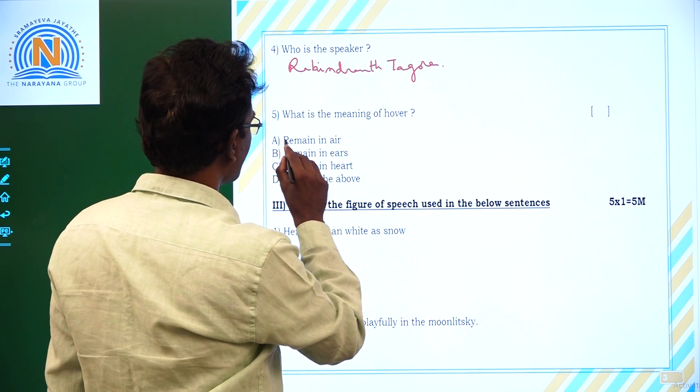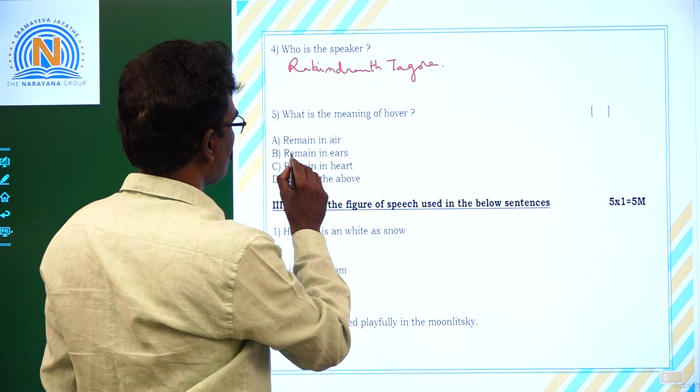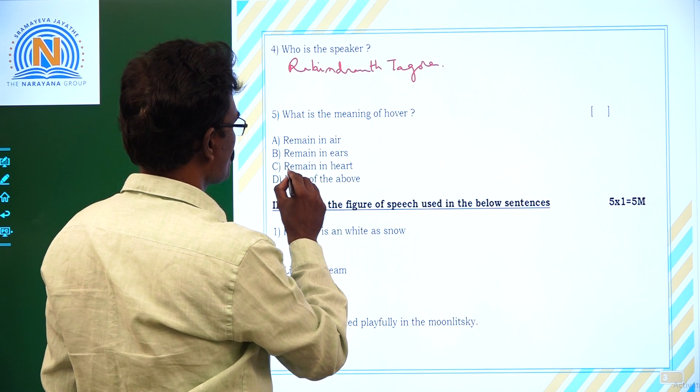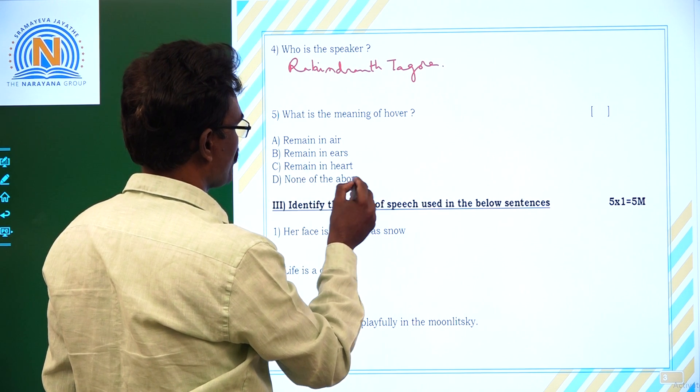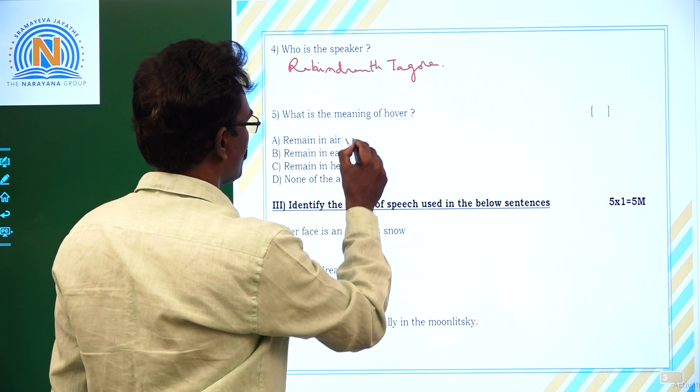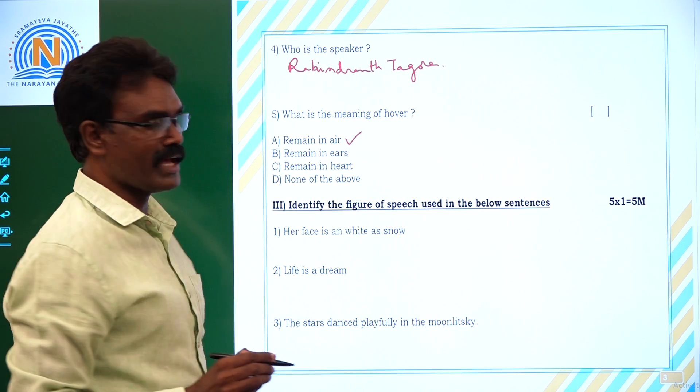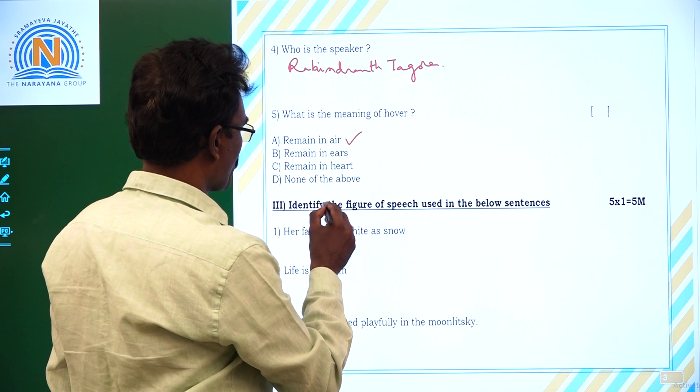What is the meaning of hover? A. Remain in air. B. Remain in years. C. Remain in heart. D. None of the above. So for this one, option A is correct. Remain in air.